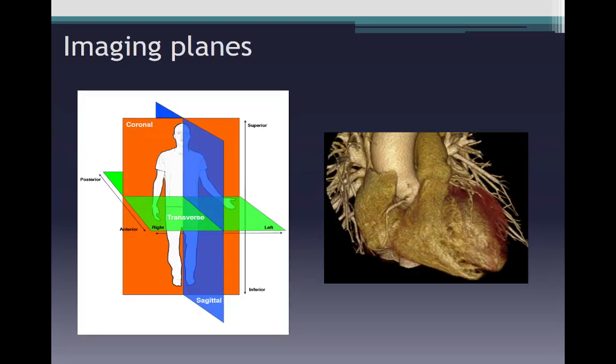Unlike most of the body where we can describe different structures in orthogonal planes such as the axial, coronal, and sagittal, it is difficult to describe the heart in these planes. The reason for that is the orientation of the heart, where the apex is lying to the left, anteriorly as well as inferiorly.